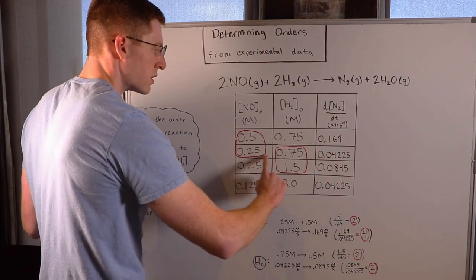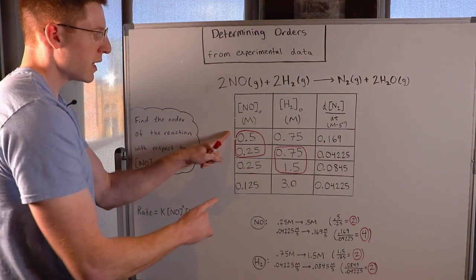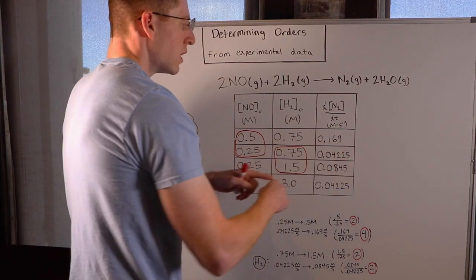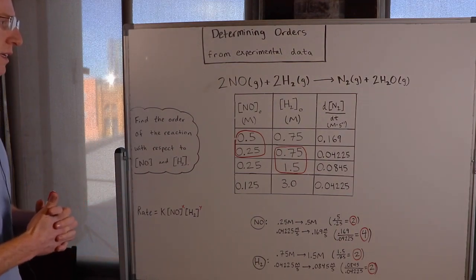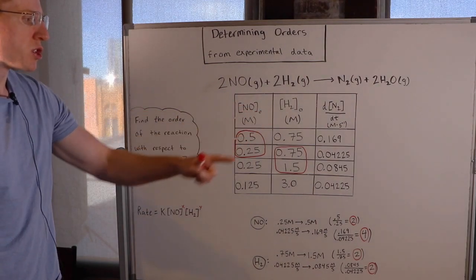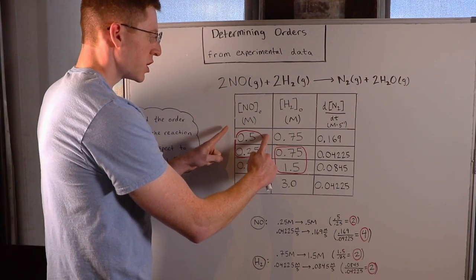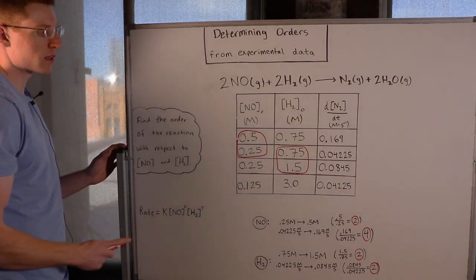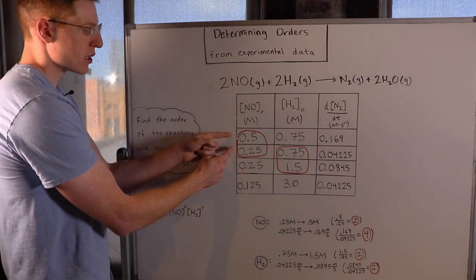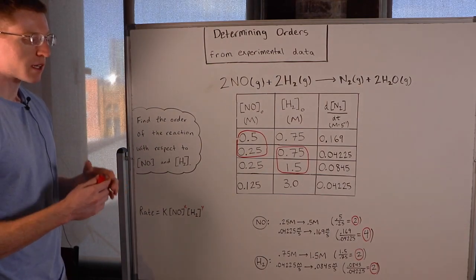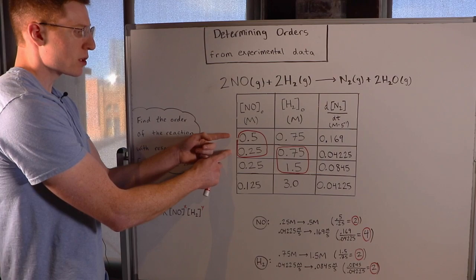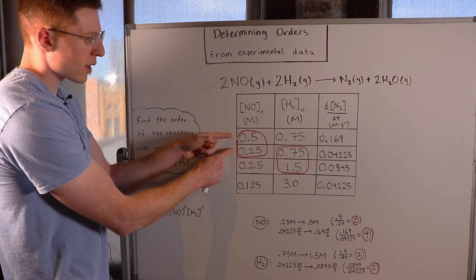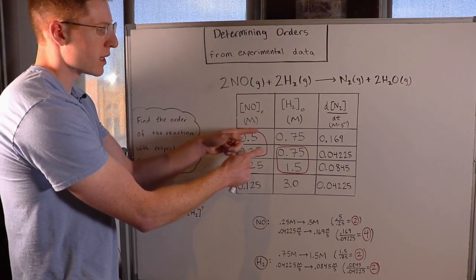In trial one, the initial concentration of NO was 0.5 molar, the initial concentration of H2 was 0.75 molar, and the overall rate was 0.169 molarity per second. To find the order with respect to NO, we need to pick two trials where the concentration of NO changed but the concentration of H2 did not change. The first two trials are perfect for this: NO's concentration changed but H2's concentration was held constant.